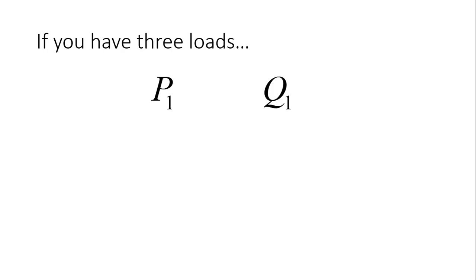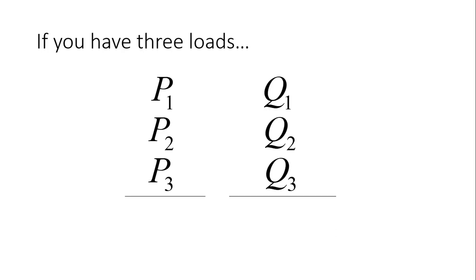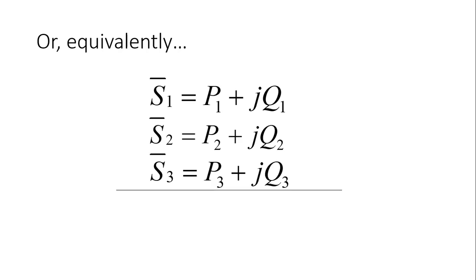If you have three loads and the first one is absorbing an active power P1 and a reactive power Q1, and a second load and a third load — at the end of the day, the sources in the circuit will have to provide the sum of all the active power Pt and the sum of all the reactive power Qt, regardless of where the loads are in the circuit. We could have achieved the same by representing them as complex numbers and adding them up together, because to add complex numbers we add the real parts and we add the imaginary parts.